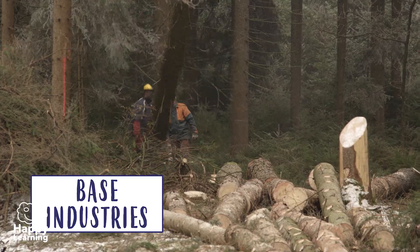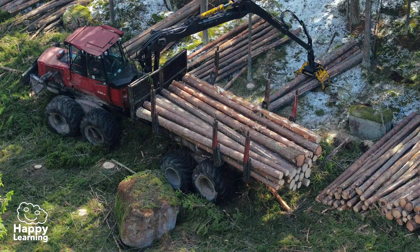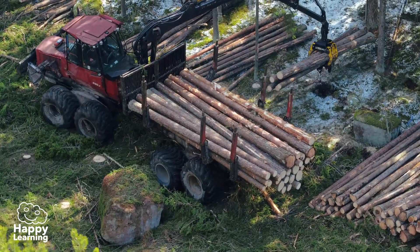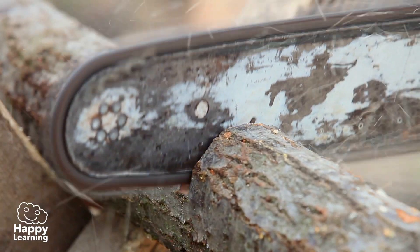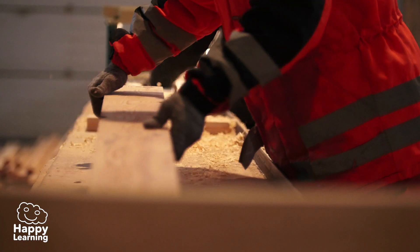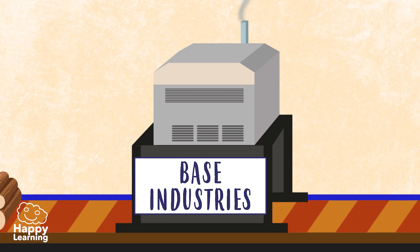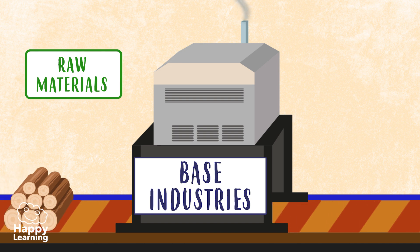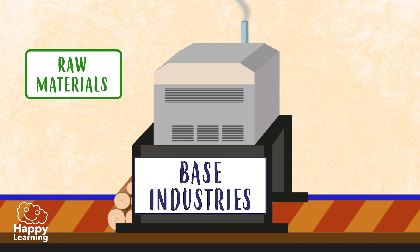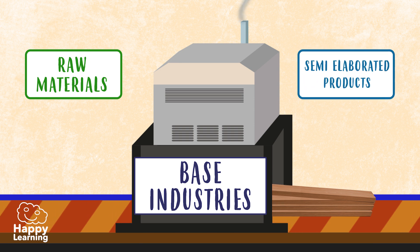Base industries transform raw materials into semi-elaborated products. They produce products which act as raw materials for other industries. For example, they produce wooden boards from trees.